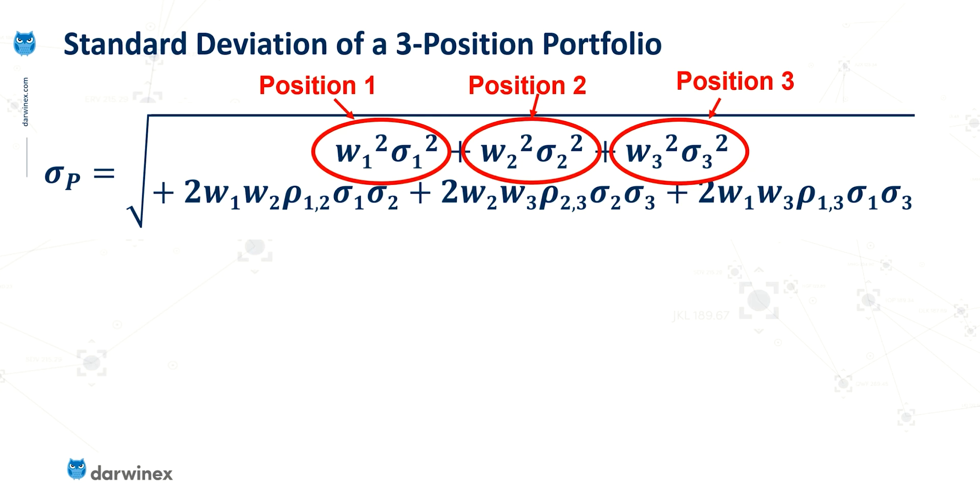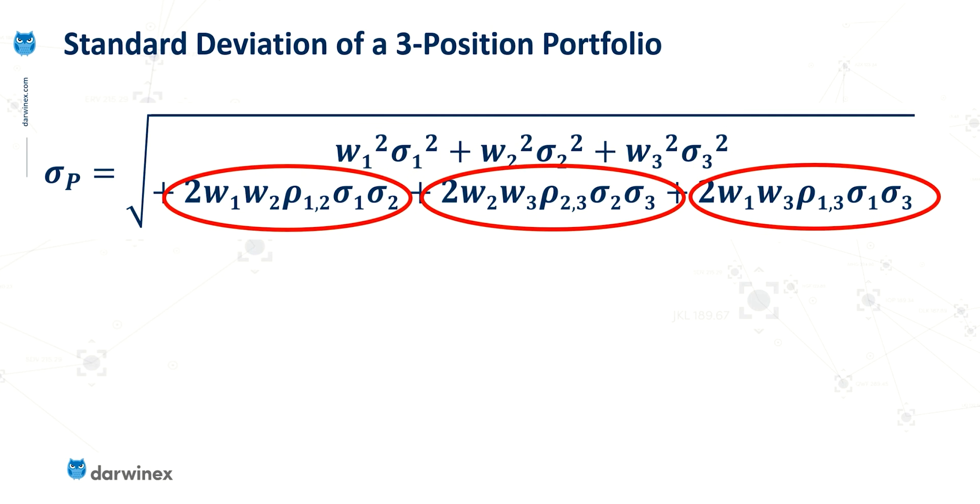However it starts to get maybe a little bit more complex when we start to look at the other terms. So here again we have three terms but this does not relate to the number of positions. That's just a coincidence when we're looking at three positions. In actual fact these terms relate to the number of correlation coefficients there are between all of the combinations of positions we're holding.